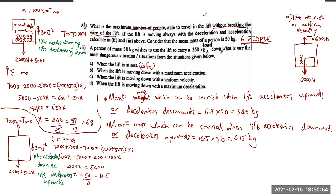Situation (b): lift moving downwards with maximum acceleration — safe, because when accelerating downwards you can accommodate up to 675 kg of payload, and they've only added 400 kg total (man + load). Situation (c): lift moving down with uniform velocity — also safe, same reasoning as at rest. Situation (d): lift moving down with maximum deceleration — dangerous, because when decelerating downwards you can carry only 340 kg, but the load is 400 kg total.